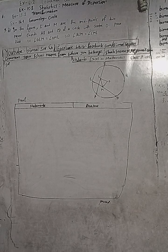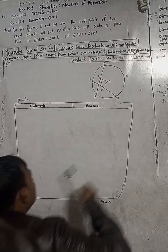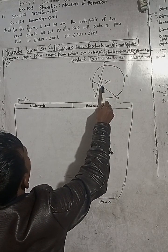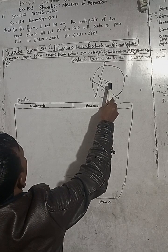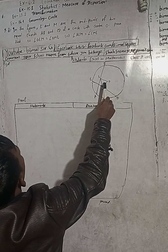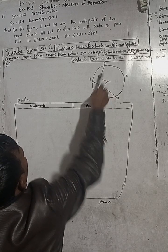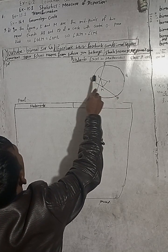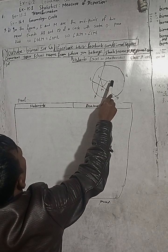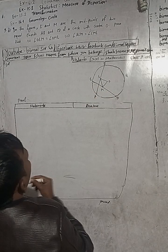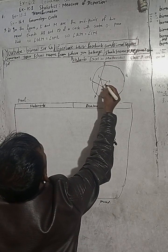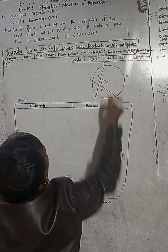And now the question is here, 9D. In the figure, L and M are the midpoints of two equal chords — equal chords means AB and CD — with center O. Prove that: one, angle OLM is equal to angle OML.